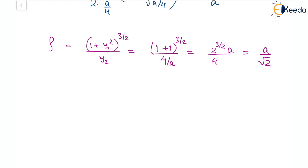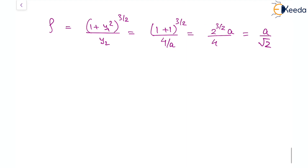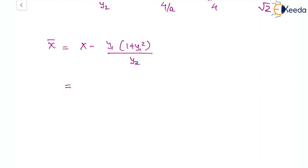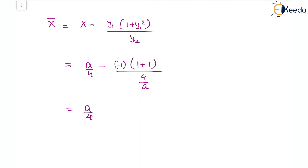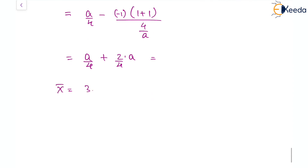For the x-coordinate of the center of curvature, the formula is x̄ = x − y1(1 + y1²)/y2. Substituting x = a/4, y1 = −1, y2 = 4/a: x̄ = a/4 + 2·(a/4) = a/4 + a/2 = 3a/4.